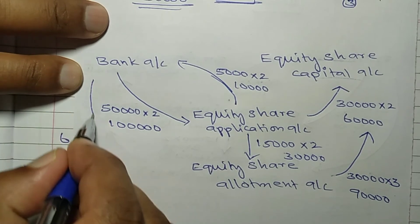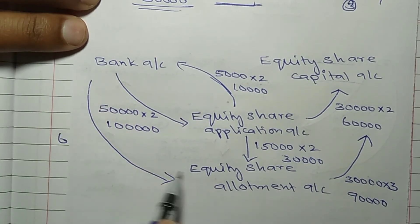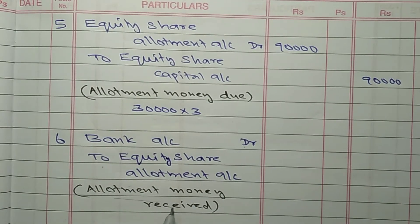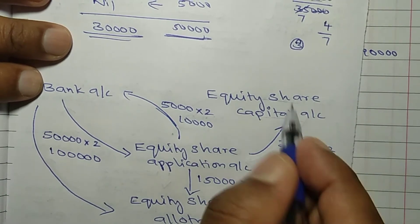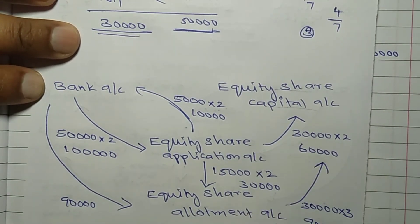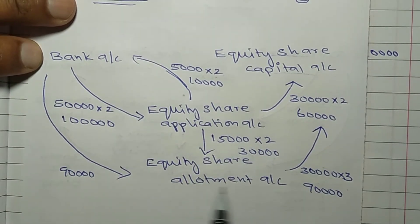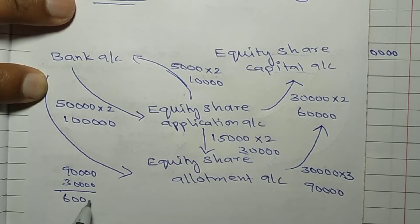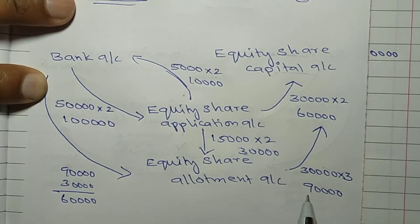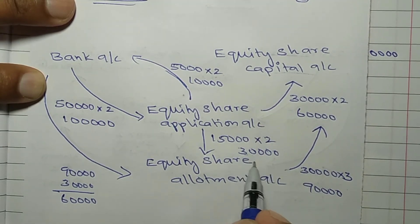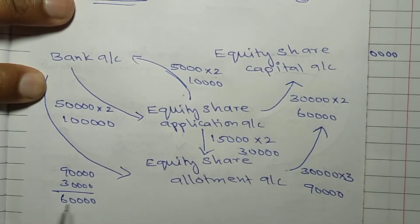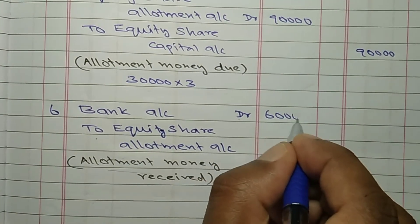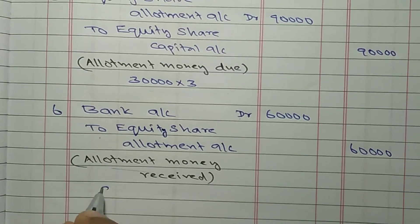Next, allotment money received. Bank account debit to equity share allotment account. Rs 90,000 is due. The excess application money of Rs 30,000 already adjusted in allotment account, so balance due from shareholders is Rs 60,000. Bank account debit Rs 60,000 to equity share allotment account credit.